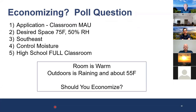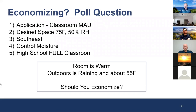I'm going to insert a poll question. The application is a classroom makeup air unit. Design space is 75°F at 50% RH, located in the Southeast, controlling moisture, high school classroom — so the room is warm. Outdoor air is raining and about 55°F. The question is: should you economize? I'm launching the poll now.